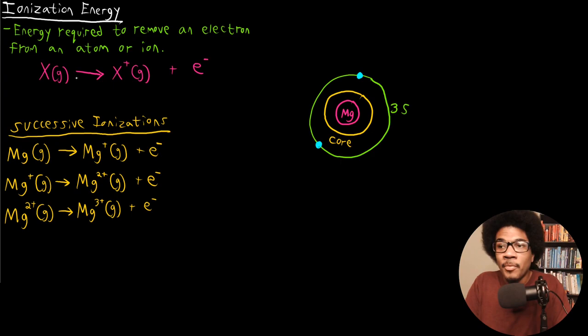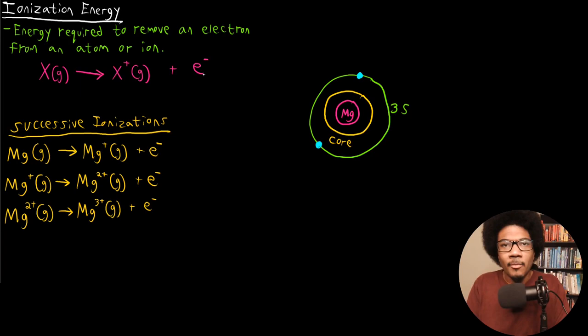Basically, you're looking at the following reaction: you have some gas phase species X, and you're looking at the energy required to liberate an electron from that species. Once you put in enough energy, you'll produce the cation plus a free electron.